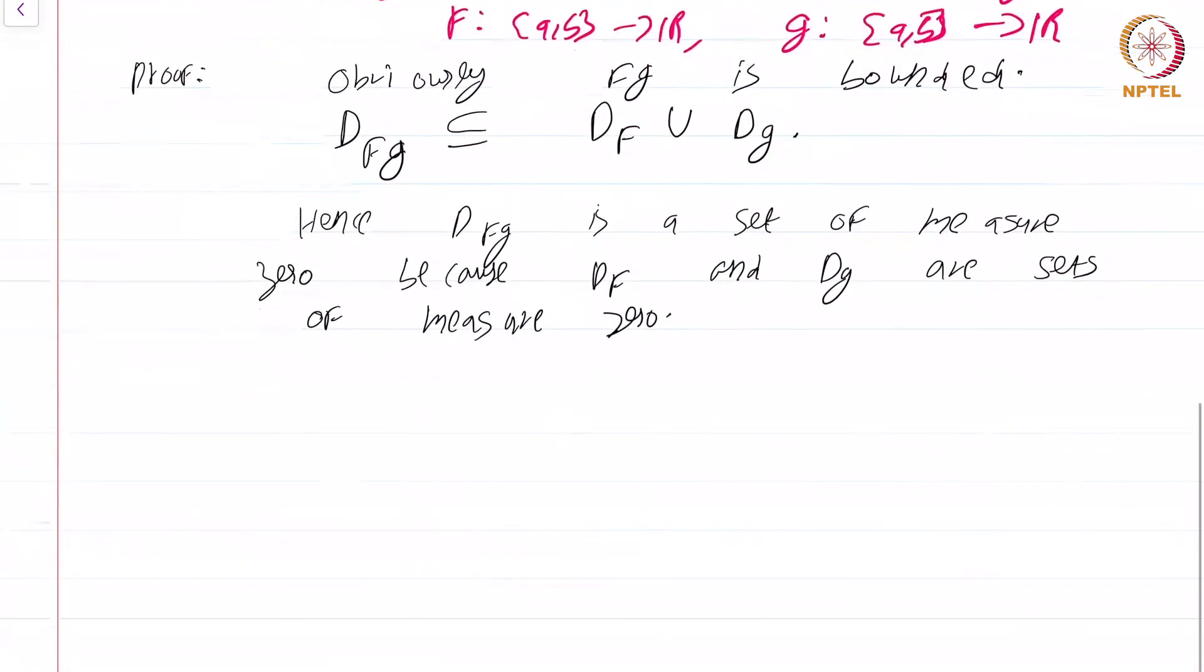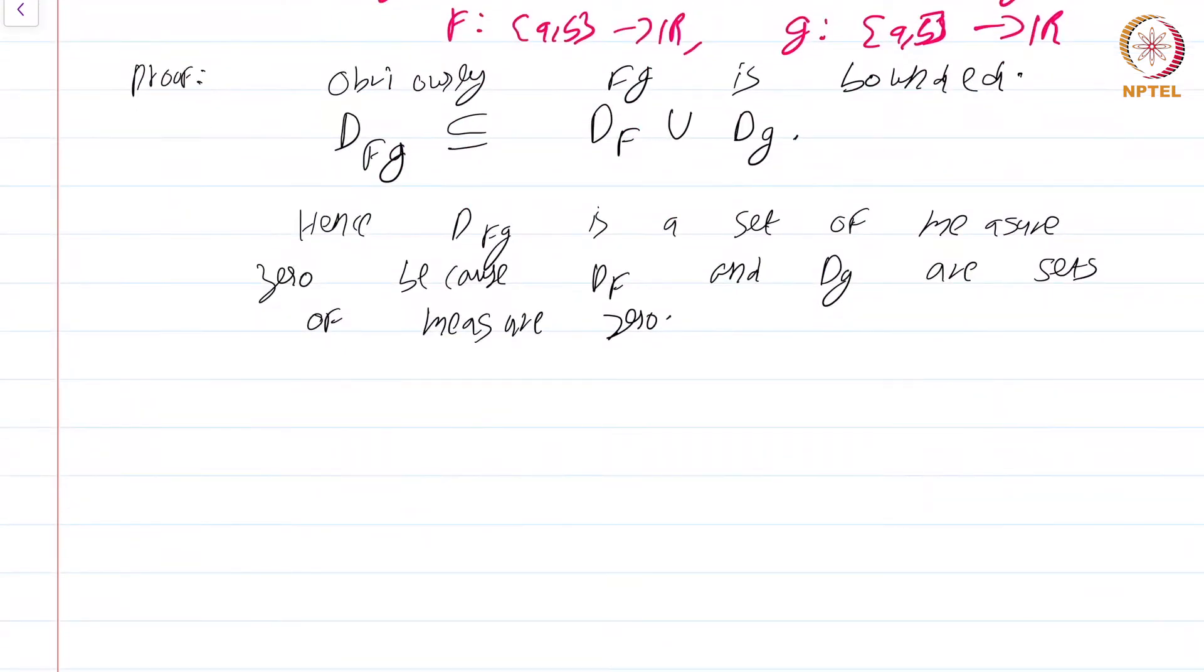Hence D_{fg} is a set of measure zero because D_f and D_g are sets of measure zero. This is a really short proof. Let us see the next corollary.